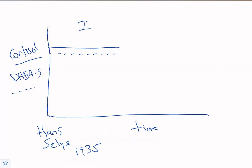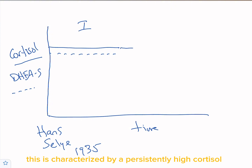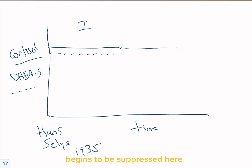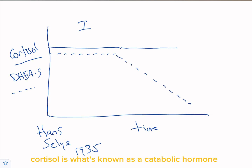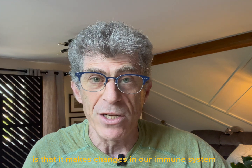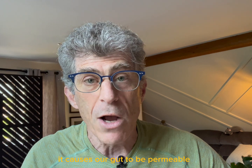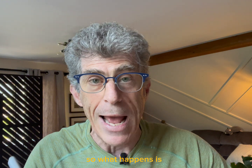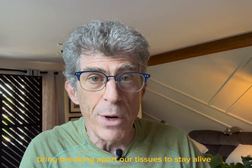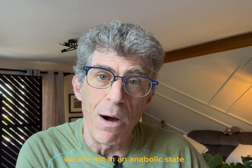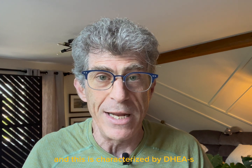Then we move into what's known as the adaptive stage, which can last for some period of time. This is characterized by persistently high cortisol, but importantly, DHEAS begins to be suppressed. Why? Because cortisol is a catabolic hormone — our stress hormone. It breaks down tissues to keep us alive. Selye demonstrated it makes changes in our immune system through the thymus gland, the brain, cardiac function; it melts muscles and bones, causes gut permeability. This is an adaptive state — catabolic, breaking apart tissues to stay alive — rather than anabolic, which is building tissues, characterized by DHEAS.